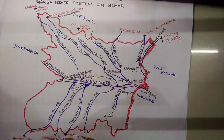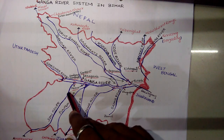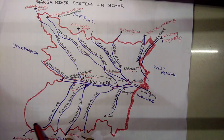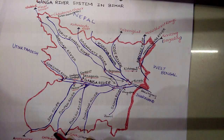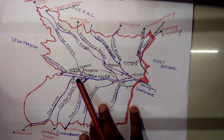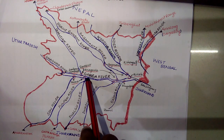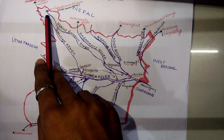Here we see Amarkantak — the major right bank river of the Ganga is the Son river, which originates from Amarkantak. Its confluence point is at Patna. The second right bank river is the Punpun river, coming from the Chhota Nagpur Plateau in Jharkhand, and it also merges into the Ganga at Patna district.